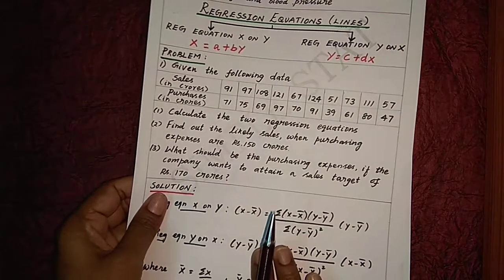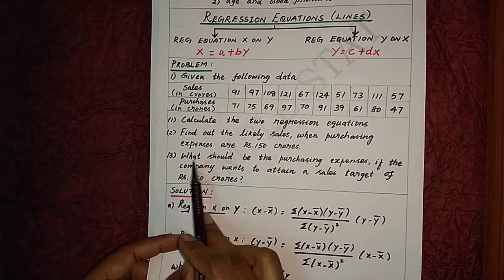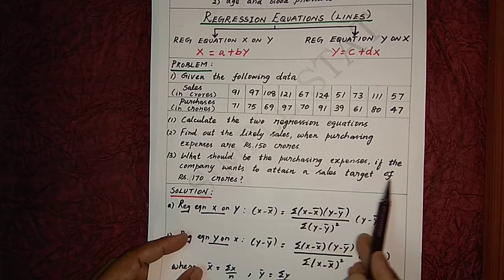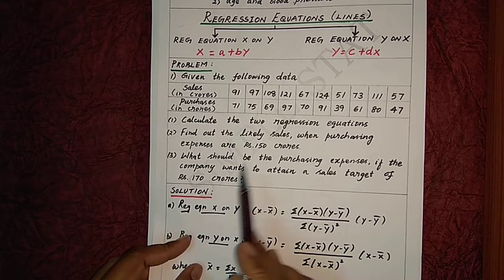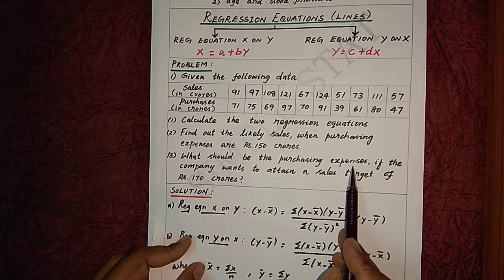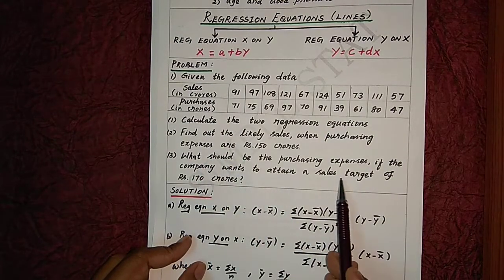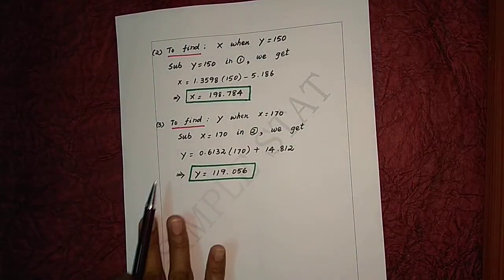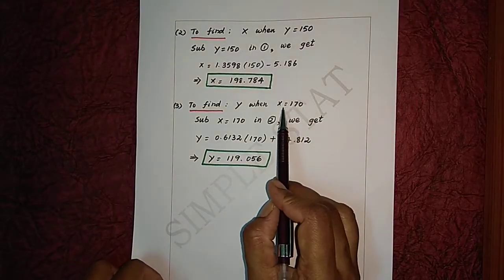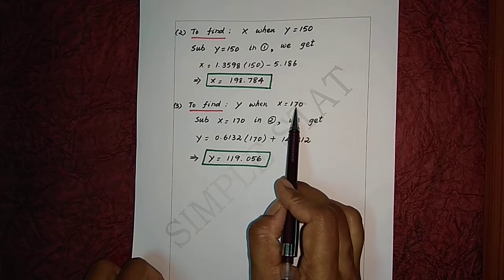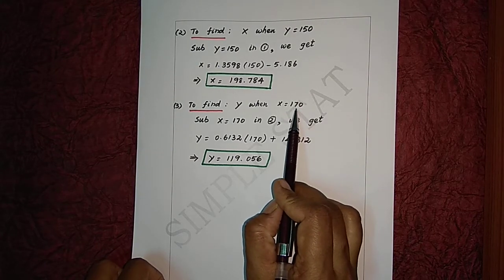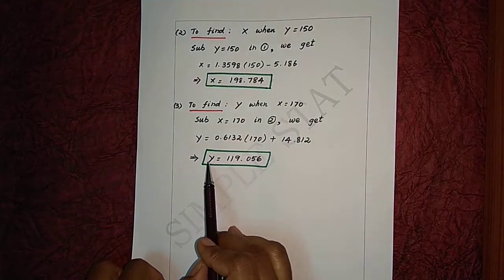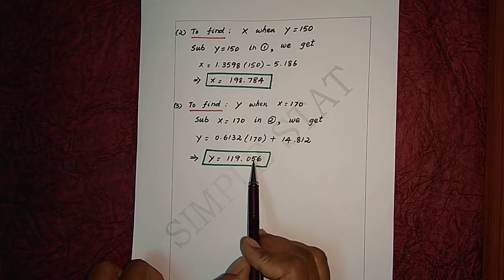Let's proceed with question number 3. What should be the purchasing expenses if the company wants to attain a sales target of Rs. 170 crores? To find y when x = 170, we substitute x = 170 into the regression equation y on x. We get y = 119.056.